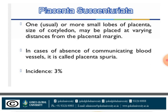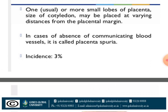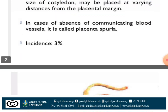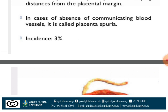The placenta is expelled after the delivery of the fetus. The first abnormality we will discuss is placenta succenturiata. What is placenta succenturiata? It is one or more small lobes of the placenta, where the size of the cotyledon may be placed at a varying distance from the placental margin.